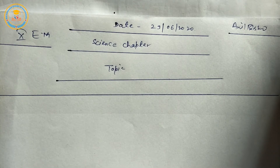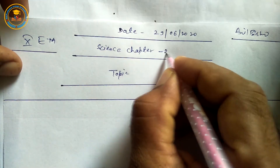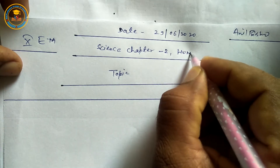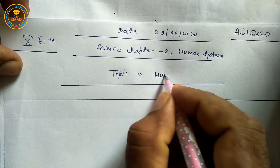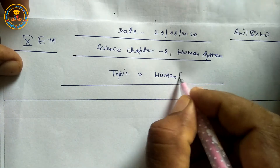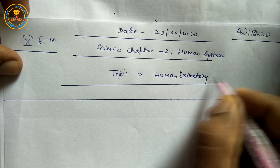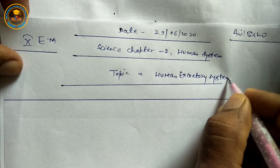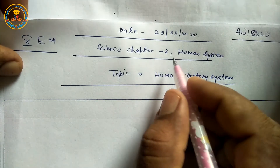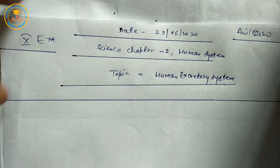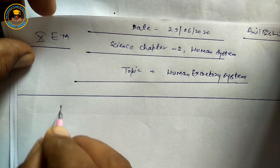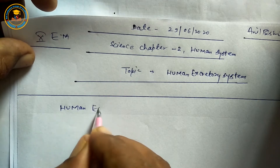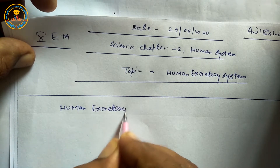Good morning students. Today we are starting Class 10th Science Book Chapter 2nd, Human System, and today's topic is the Human Excretory System.